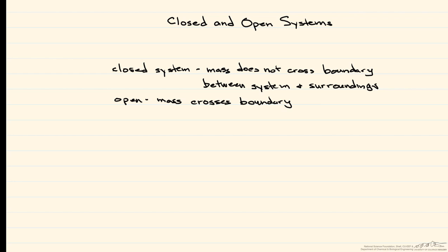Let's start with the governing equation for a closed system. That is delta U, which is the change in internal energy, plus delta E sub P, which is the change in potential energy, plus delta E sub K, which is the change in kinetic energy, is equal to the heat Q plus the work. The first thing we do with this equation is to simplify it.